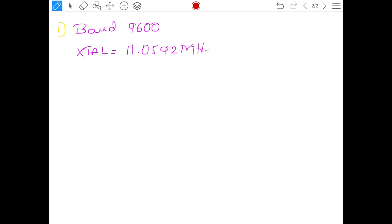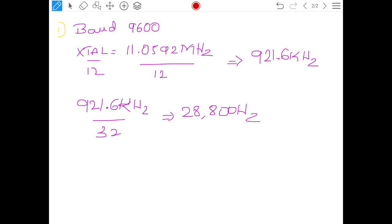Crystal frequency is 11.0590 megahertz divided by 12 to get our machine cycles. So, machine cycle is 921.6 kilohertz machine cycle frequency. According to UART it is again 921.6 kilohertz divided by 32 to get a standard value of 28800 hertz. This is the frequency of serial communication.